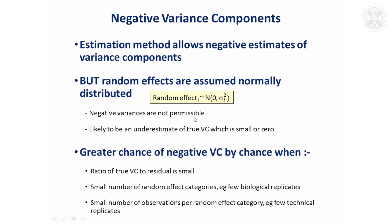Sometimes that gives rise to negative variance components. The estimation methods sometimes will allow those estimates to go negative, but you can't really allow that because we've made the assumption that the random effects have got normal distributions and you can't have negative values of variances, so that's not permissible.